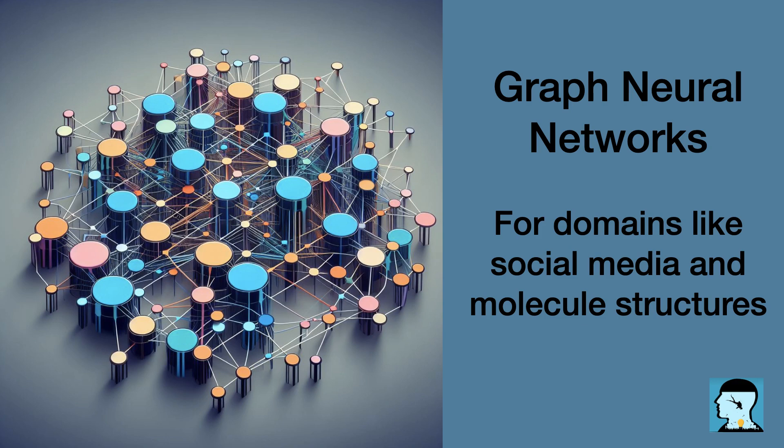Third, aggregation — after receiving information from neighbors, each node combines and aggregates it to form a more complete picture. Fourth, an update function — using the aggregated information, each node updates its own representations to get a better understanding. Fifth, output generation — all the nodes collaborate to generate the final solution, taking into account the information gathered and updated throughout the process. The general framework involves nodes starting with initial features, passing messages, aggregating received information, and finally generating an output based on the collective understanding of the entire graph.